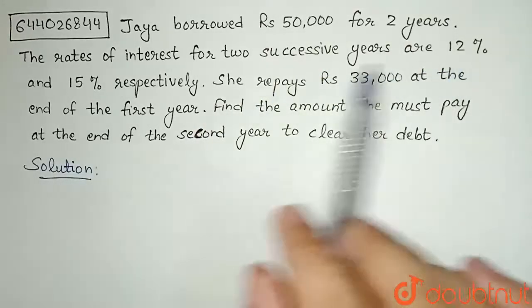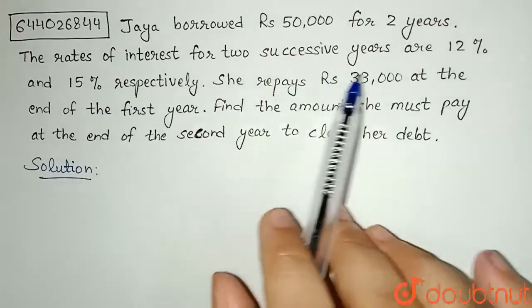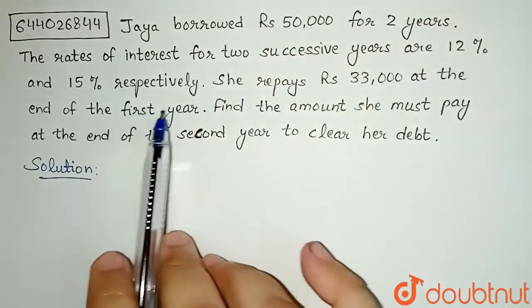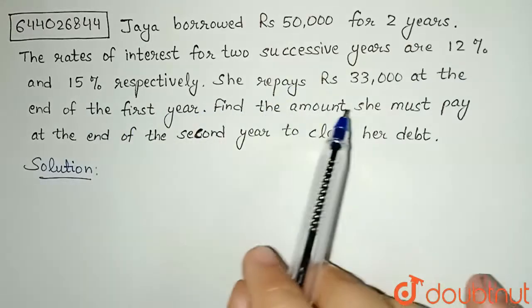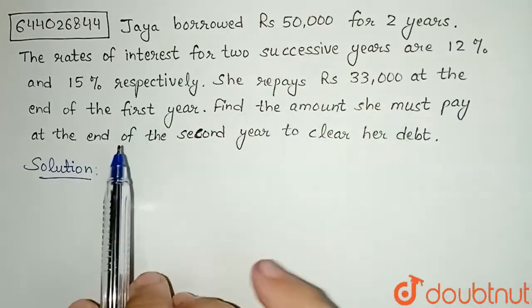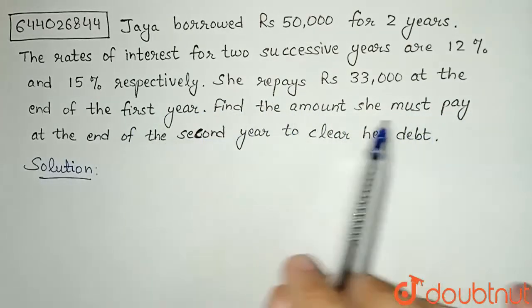borrowed Rs 50,000 for two years. The rates of interest for two successive years are 12% and 15% respectively. She repays Rs 33,000 at the end of the first year. Find the amount she must pay at the end of the second year to clear her debt.